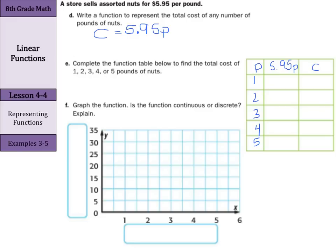So, when I have one pound, that's going to be $5.95 times that one. And that's going to result in $5.95. When I have two pounds of nuts, I'm going to have $5.95 times the two. And that is equal to $11.90 when you multiply.